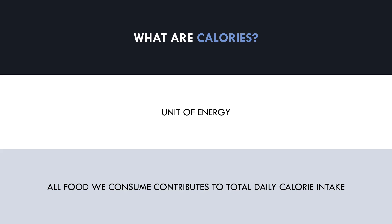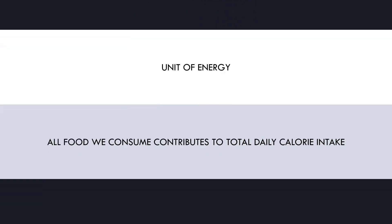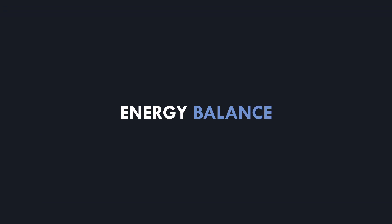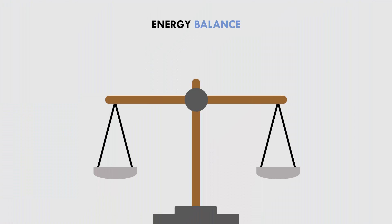To understand the effects on body composition, we need to understand the concept of energy balance. This refers to how much energy we intake versus how much we expend. There are three primary different forms of energy balance we can be in at any given point in time. Let's now explore what these are.